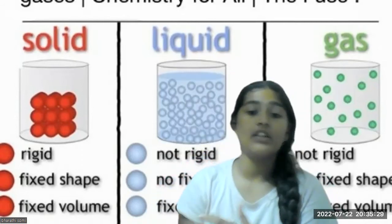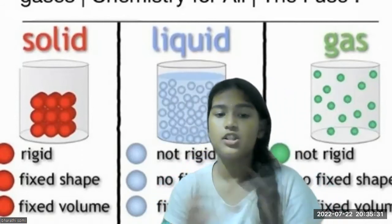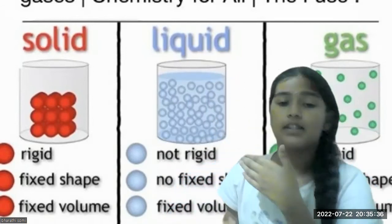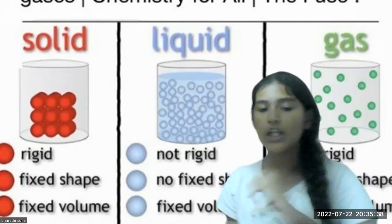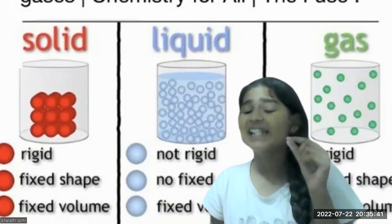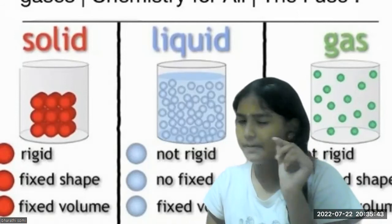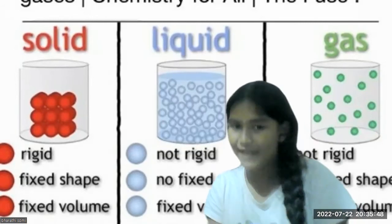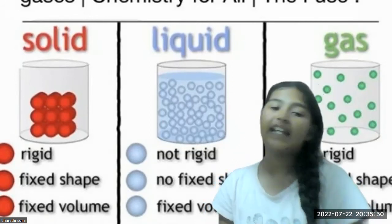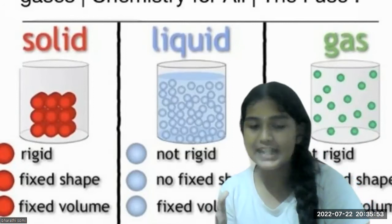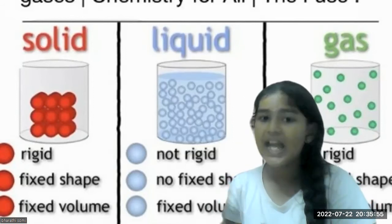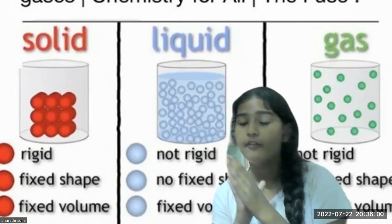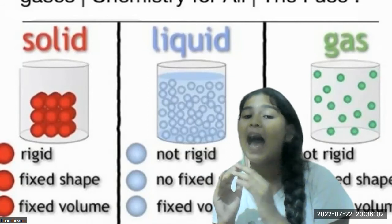Next, regarding intermolecular space and force in liquids: as you can see in the diagram, the molecules are not as compactly packed as in solids. Liquids have some intermolecular space and a somewhat weaker intermolecular force. The movement of molecules in a liquid is random.